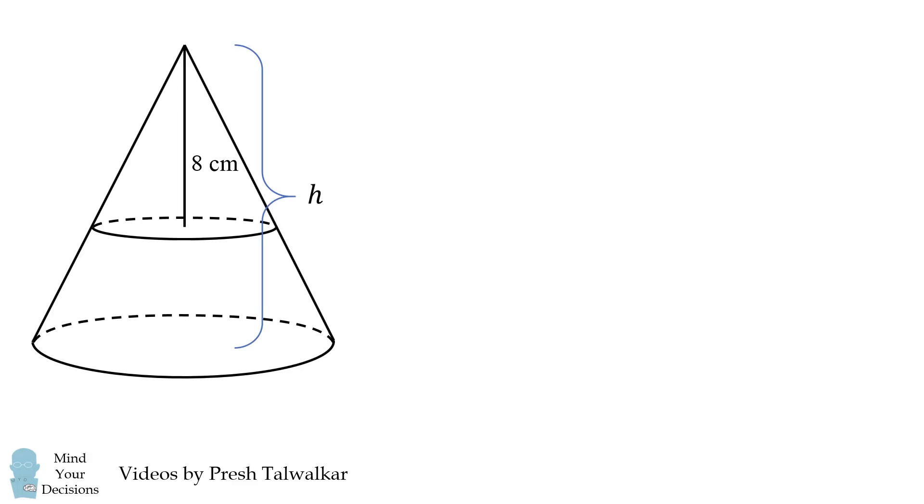We'll write h for the height of the cone. Now let's set up some triangles. We have a large triangle where its one leg is equal to the radius of the circle at the bottom, and we'll denote that as r. We have another triangle where its base is the radius of the upper cone, and we'll write r sub 1 for that.